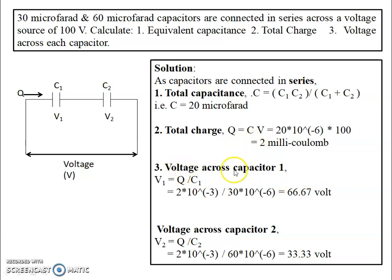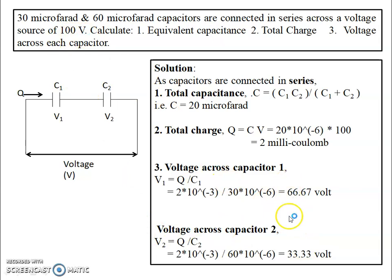To find the voltage across each capacitor, we use V = Q/C. Total charge is 2 millicoulombs. Dividing by C1 (30 microfarad) gives voltage V1 = 66.67 volts, and dividing by C2 (60 microfarad) gives V2 = 33.33 volts. Adding V1 + V2 gives 100 volts, which matches the applied voltage. This confirms our series combination calculation.